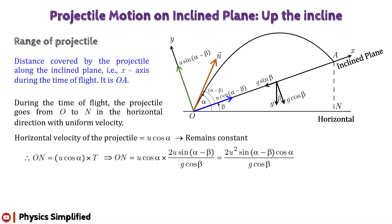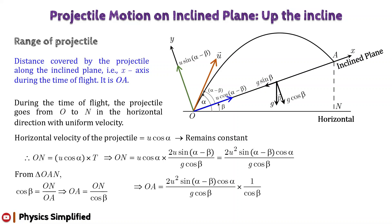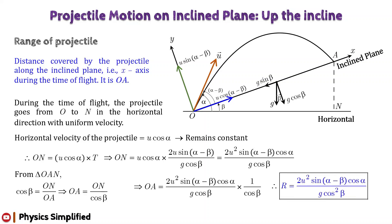From the right-angle triangle OAN, we have: cos β = ON / OA, therefore OA = ON / cos β. Substituting the expression for ON from the previous equation and simplifying, we obtain the range of the projectile up the incline: R = 2u² sin(α−β) cos α / (g cos² β).